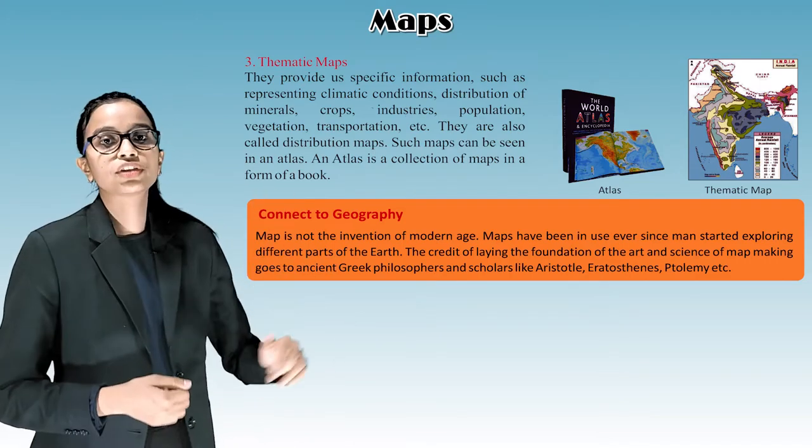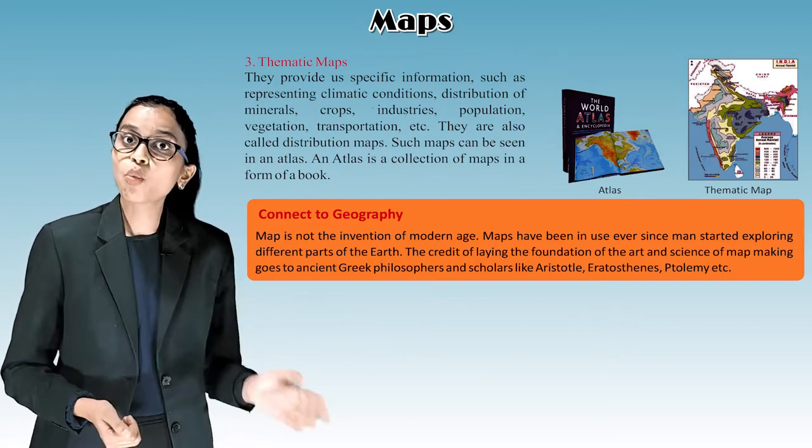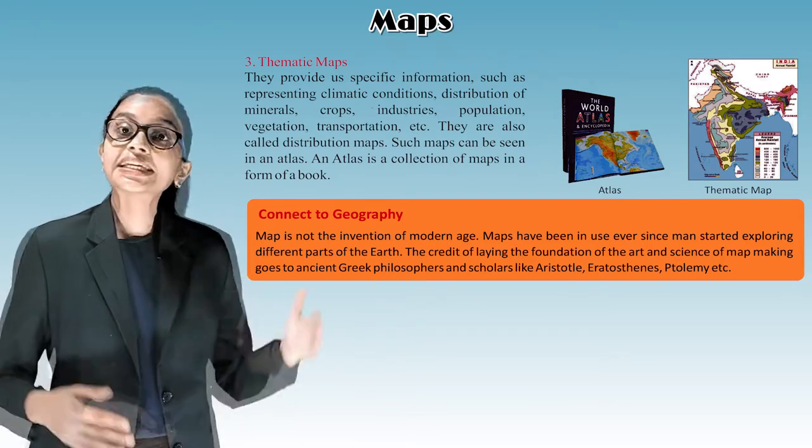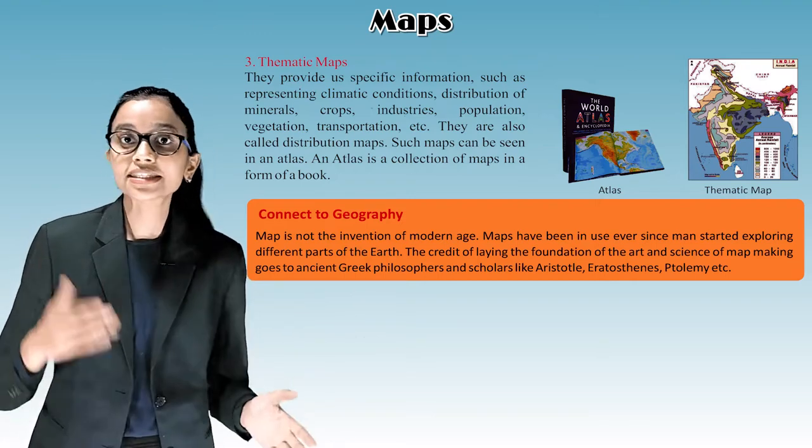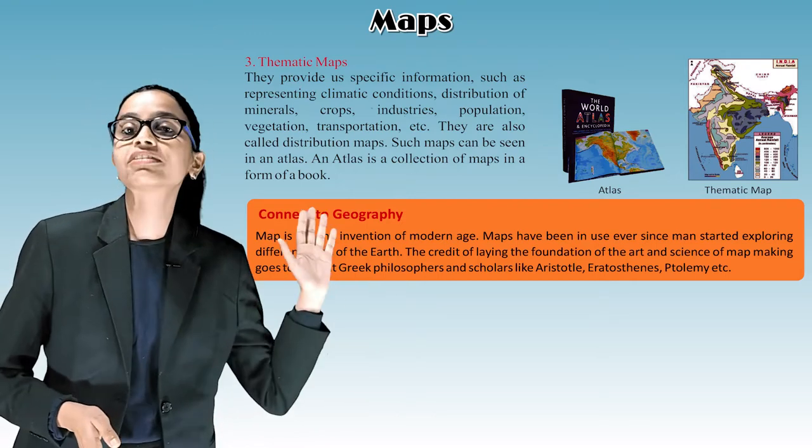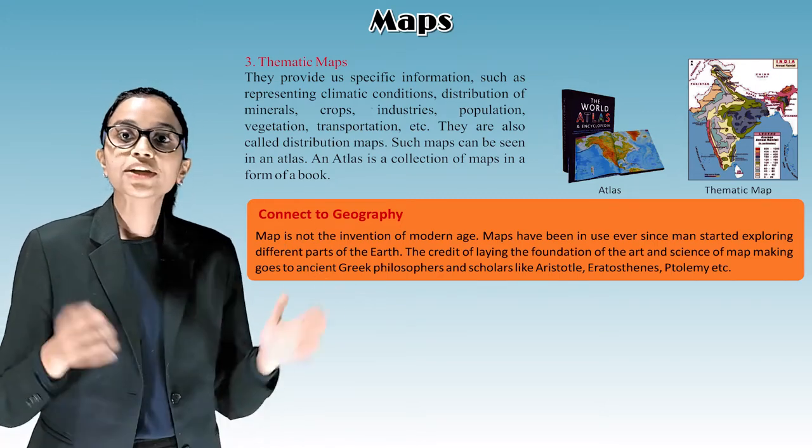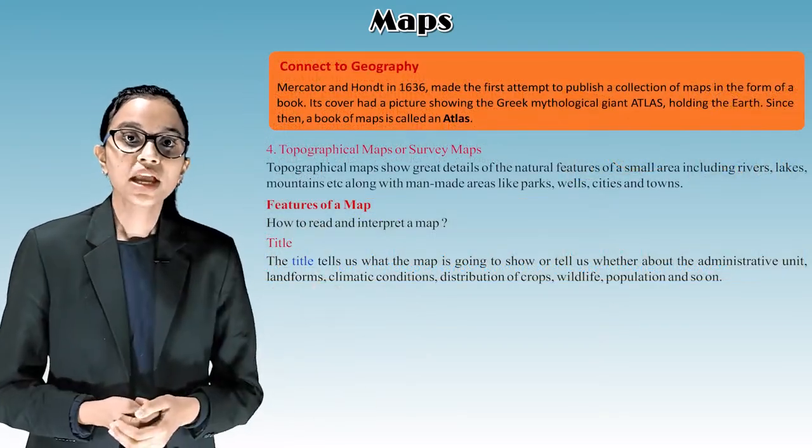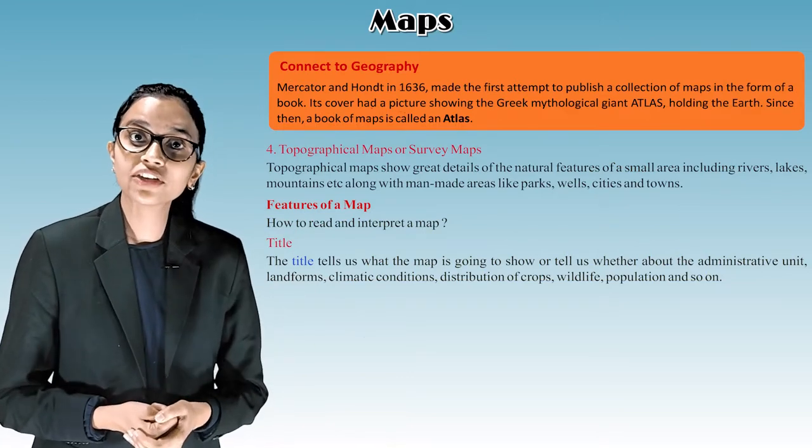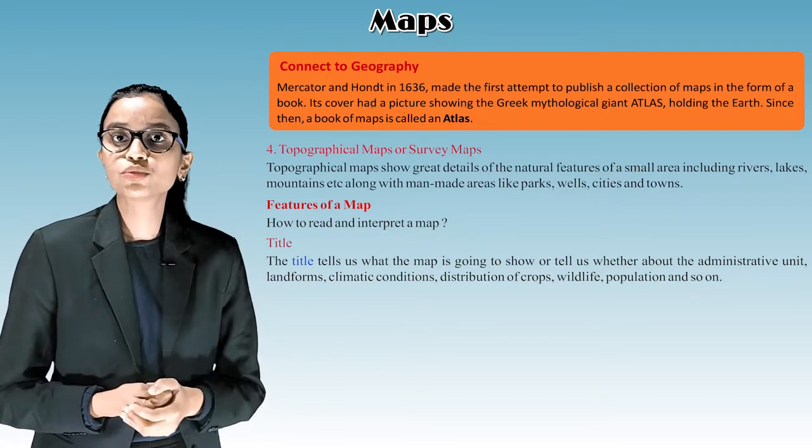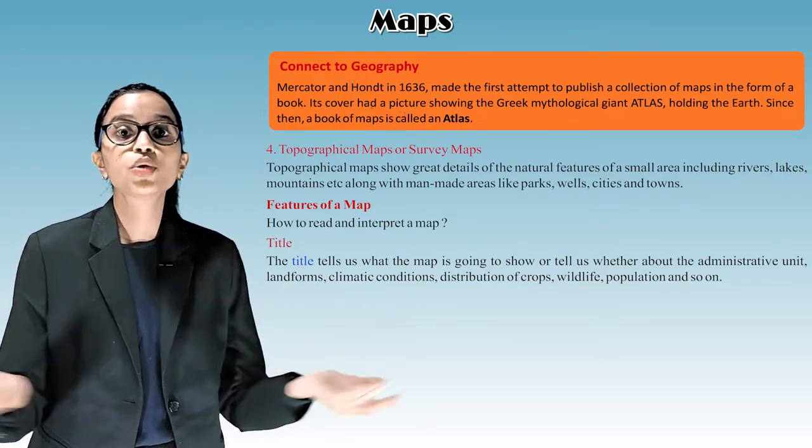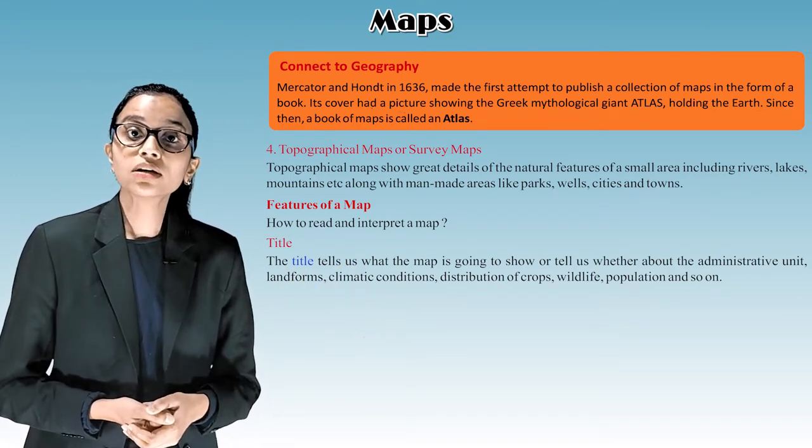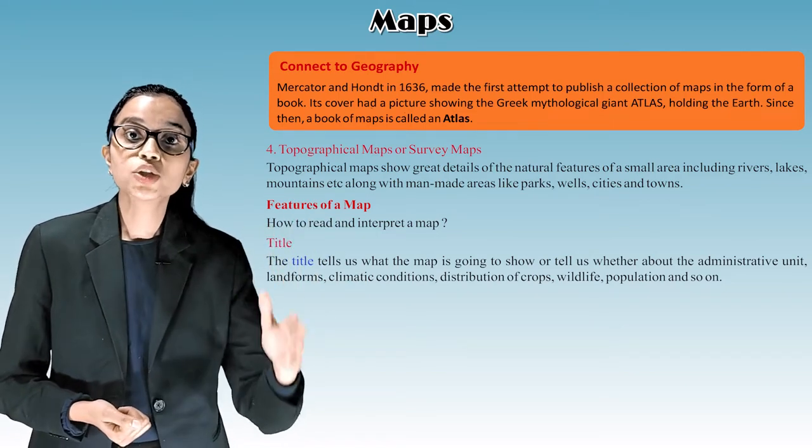Connect to geography. Map is not the invention of modern age. Maps have been in use ever since man started exploring different parts of the earth. The credit of laying the foundation of the science of map making goes to ancient Greek philosophers and scholars like Aristotle, Eratosthenes, Ptolemy, etc. Connect to geography. Mercator and Hondius in 1636 made the first attempt to publish a collection of maps in the form of a book. Its cover had a picture showing the Greek mythological giant Atlas holding the earth. Since then, a book of maps is called an atlas.